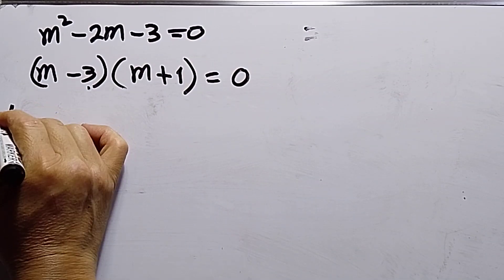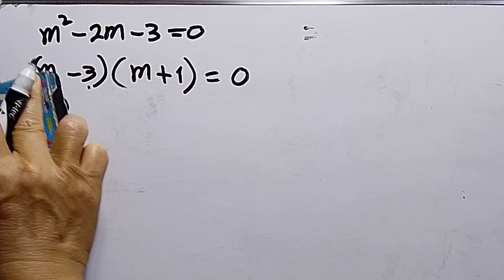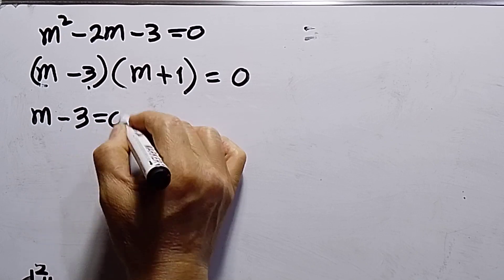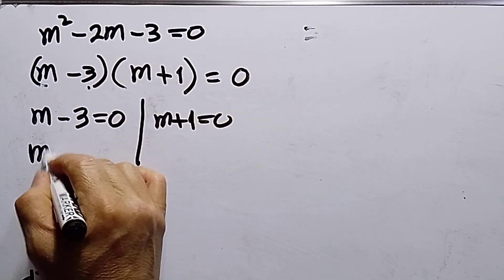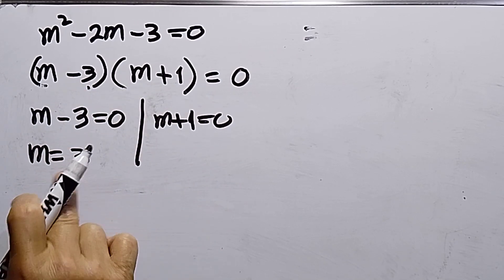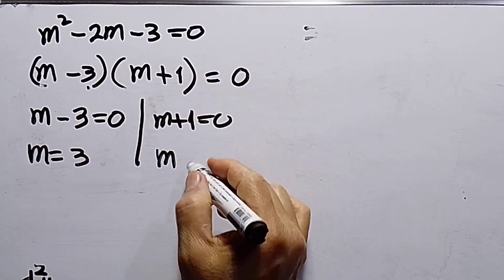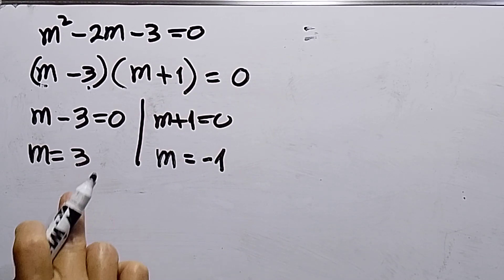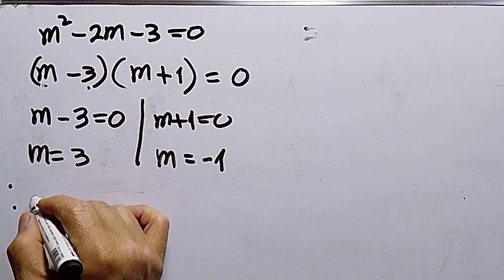Now equating each factor to zero: m minus 3 equals 0 gives m equals 3, and m plus 1 equals 0 gives m equals negative 1. Therefore my roots are m equals 3 and m equals negative 1.